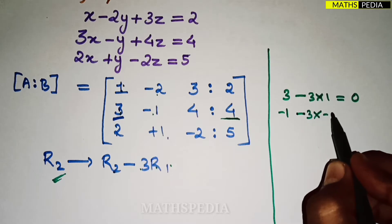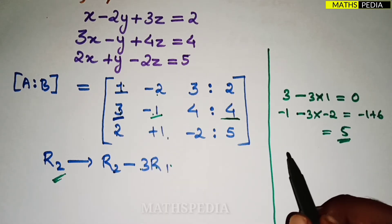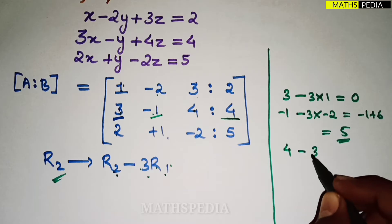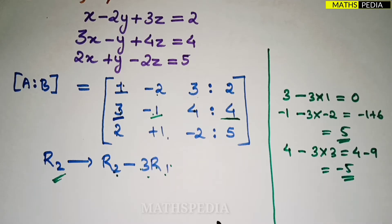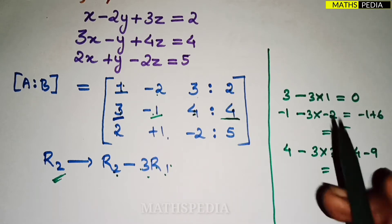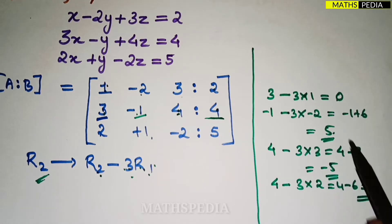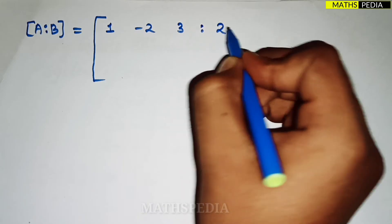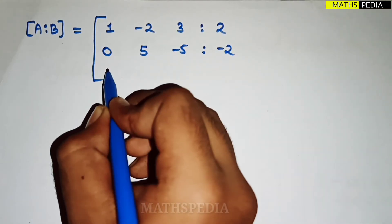Continuing R2 = R2 − 3R1: the third element is 4 minus 3×3 = 4 − 9 = minus 5. The constant term: 4 minus 3×2 = 4 − 6 = minus 2. So the new second row becomes: 0, 5, minus 5, minus 2. The rest of the matrix remains the same.